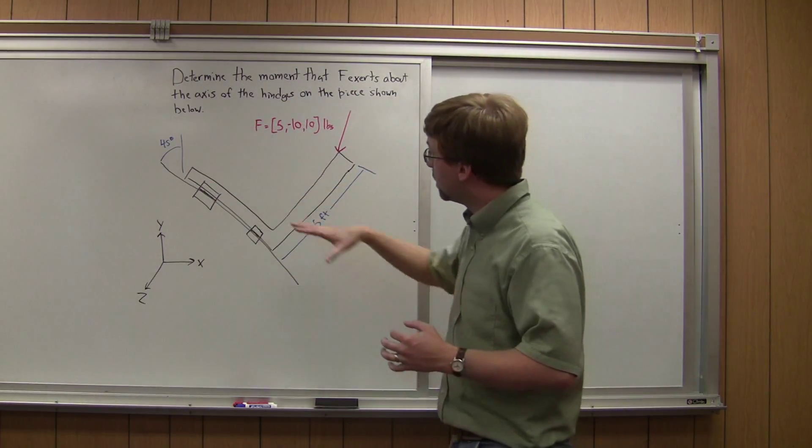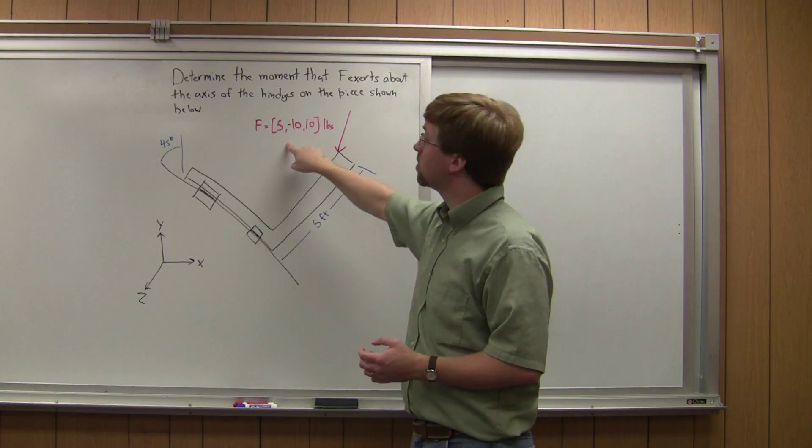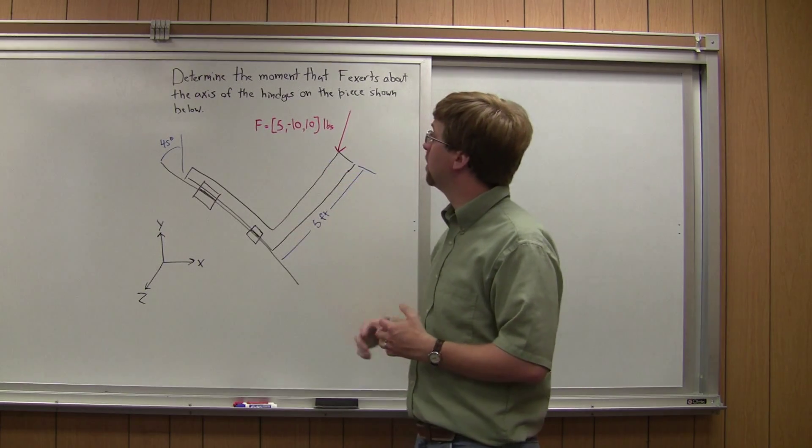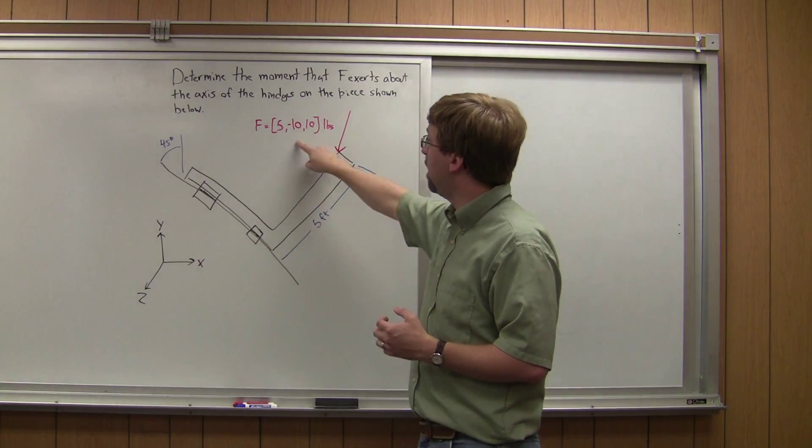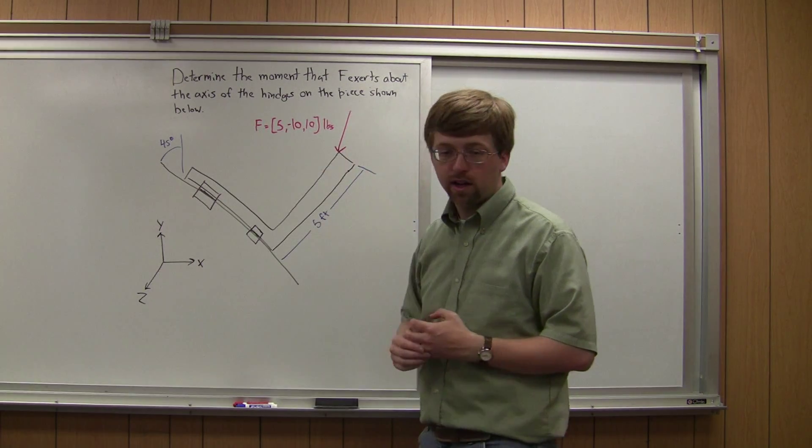So we've got this L-shaped bracket and we know it's got a length of 5 feet this way and it's got a force acting on it. The force is already in component form: 5 pounds in the x-axis, negative 10 in the y-axis, and 10 pounds in the z-axis.